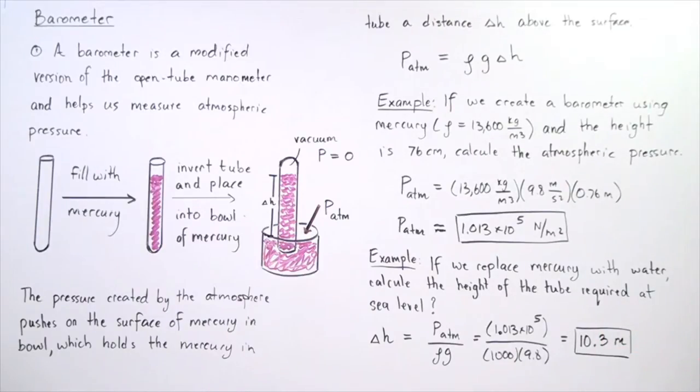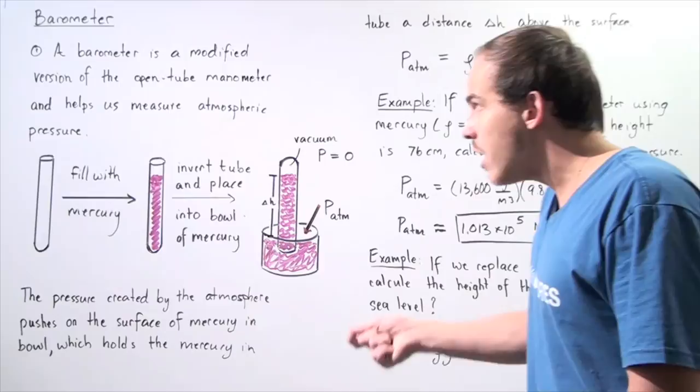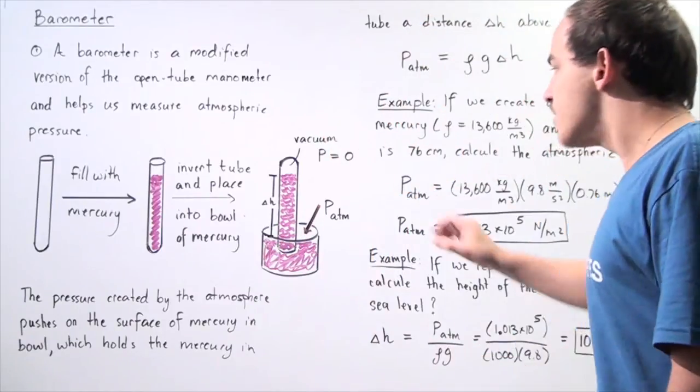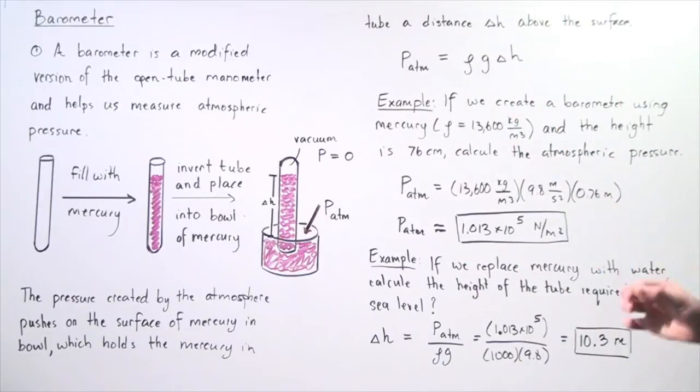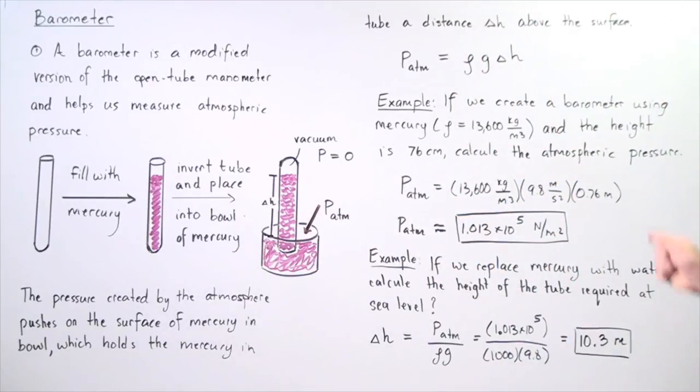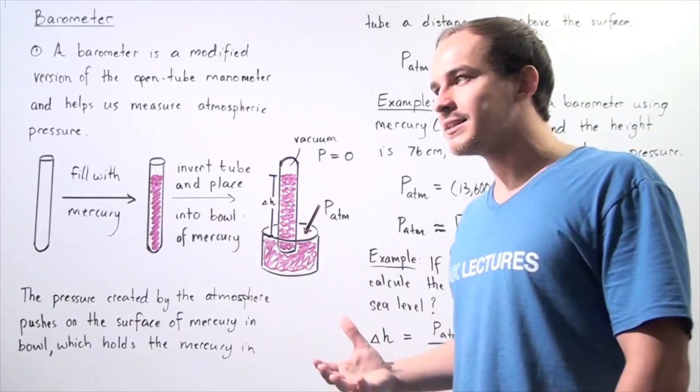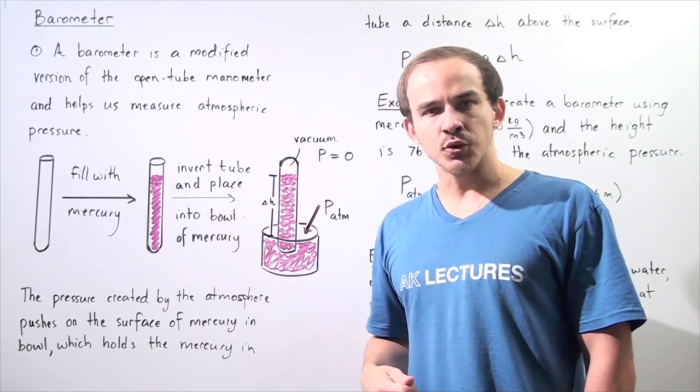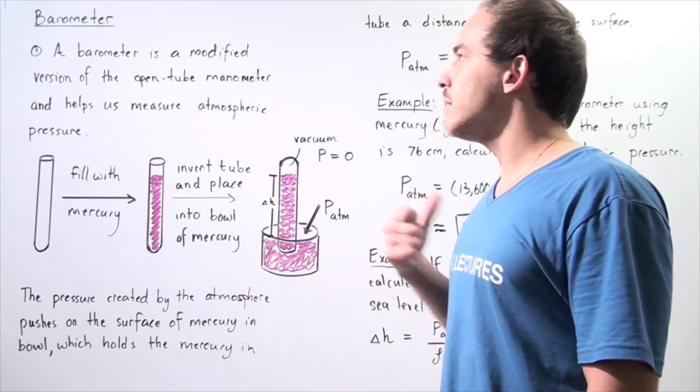We see exactly why using water in a barometer is very impractical because the height of the test tube has to be at least 10.3 meters versus if we use mercury, the height of the test tube has to be 76 centimeters. So it's much more practical to use a more dense liquid such as mercury than water in a barometer.